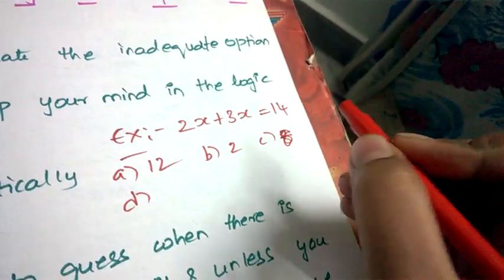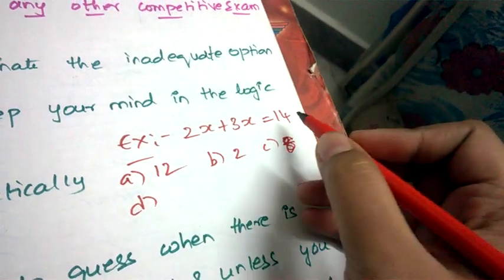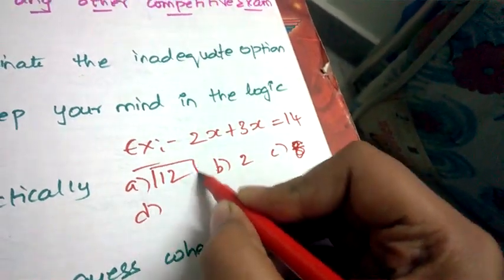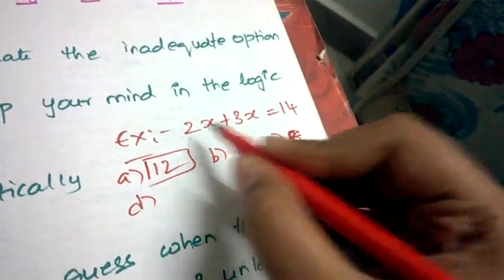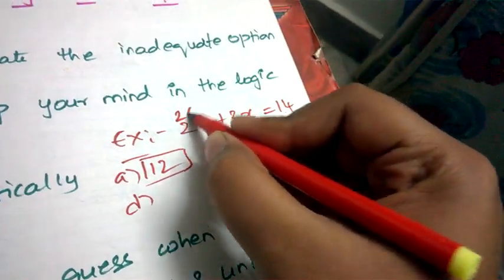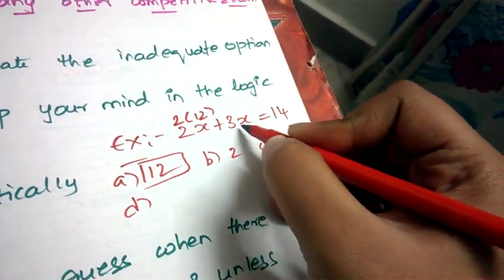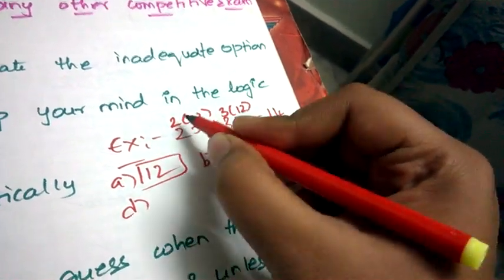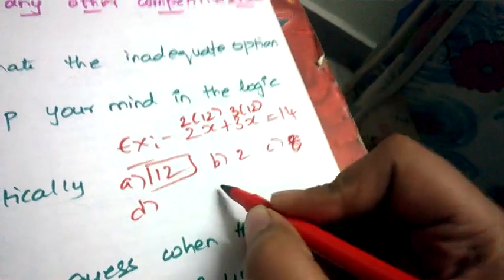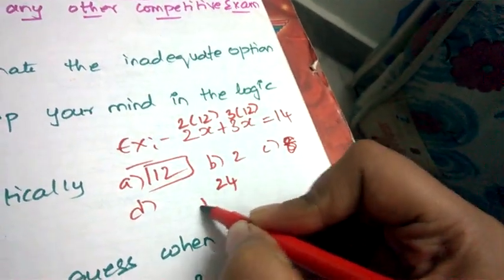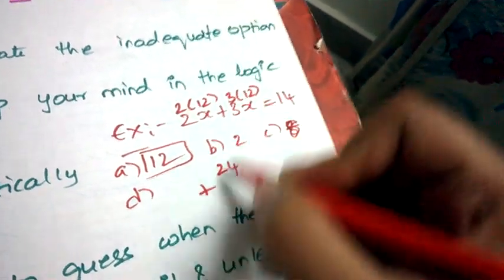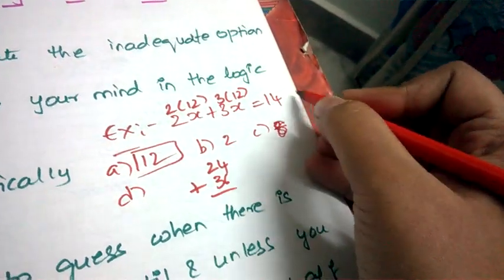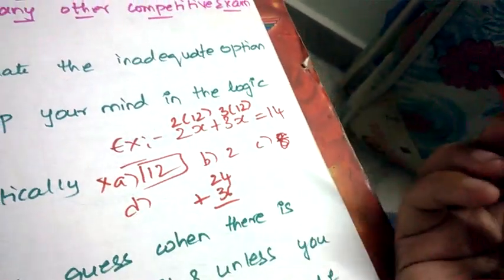First try to eliminate the options. Consider 12. When you keep 12 in this option and when you keep 12 in another x, 12 2s are 24 plus 12 3s are 36, which gives the value of more than 14. So eliminate this option.